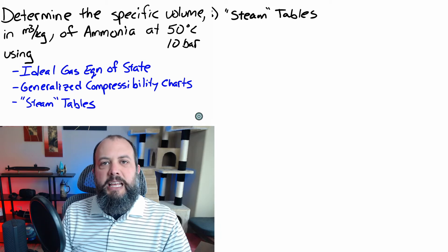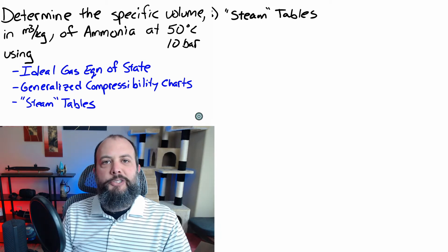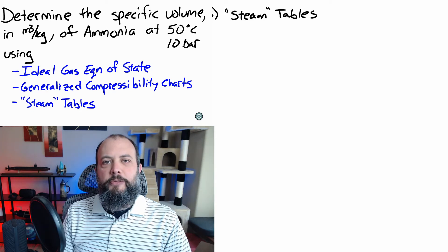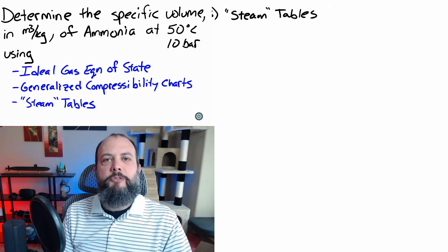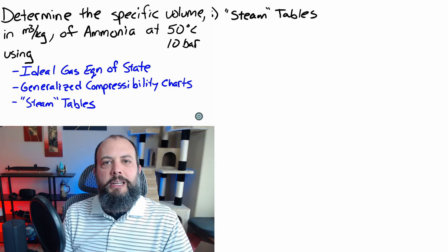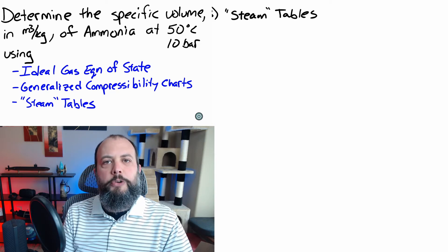And the third method is going to be the steam tables in the back of the textbook. And I'm using that term a little generally. Obviously, ammonia is not steam, but it's common for engineers to refer to all of those tables in the back of your thermo book as the steam tables.